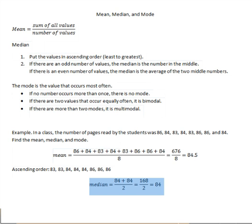The mode is the value that occurs most often. 84 and 86 are tied with three occurrences each, so this is bimodal with modes 84 and 86.